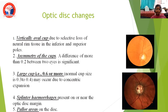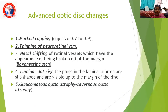A large cup of 0.6 or more due to concentric expansion is also suggestive of glaucoma. We also have splinter hemorrhages present on or near the optic disc margin, and pallor areas on the disc. To summarize the optic disc changes: vertically oval cup, asymmetry of the cups, large cup more than 0.6, splinter hemorrhages, and pallor areas.